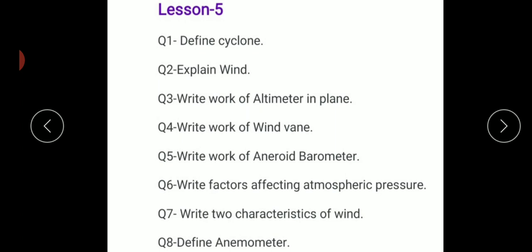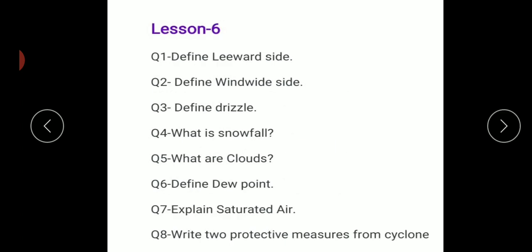Chapter 6: What is leeward side? Leeward side is when the side of the mountain is sheltered from wind, whereas the side of the mountain from which wind is blowing is called windward side.